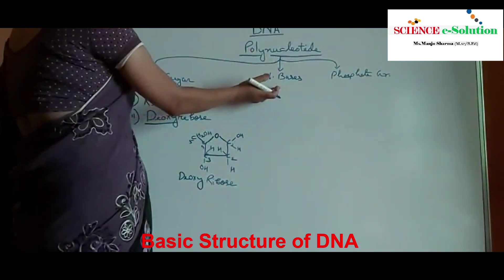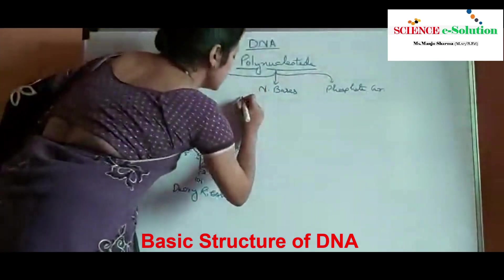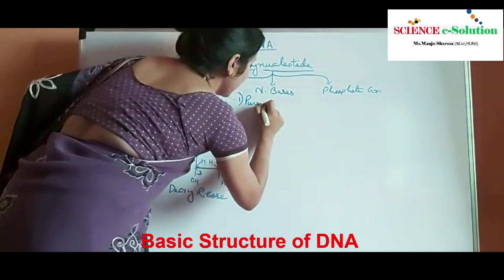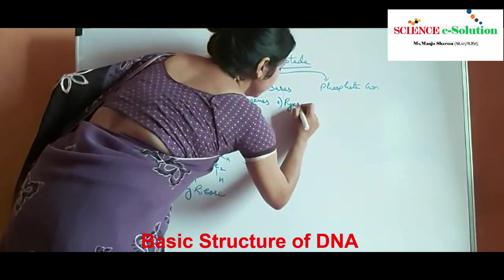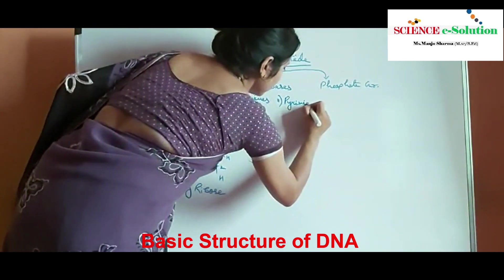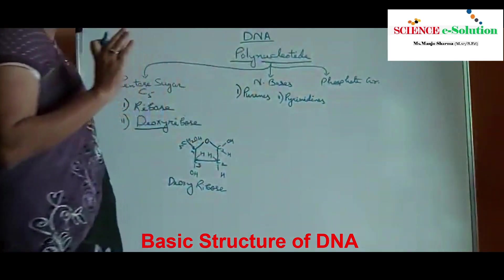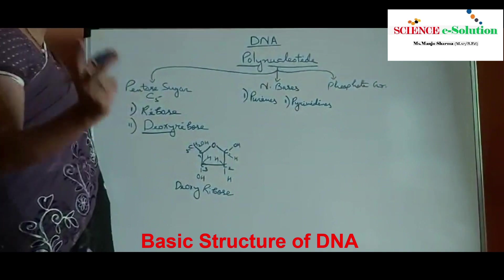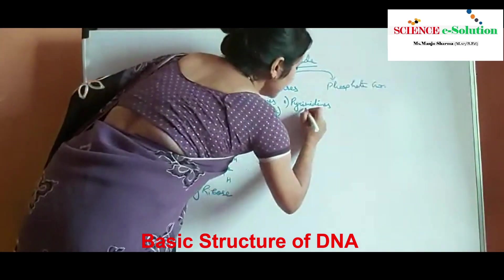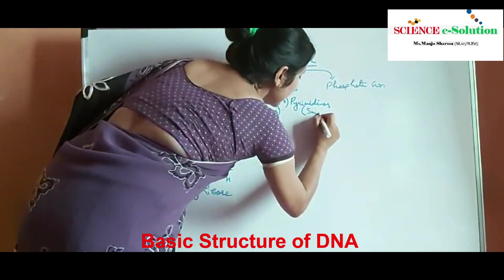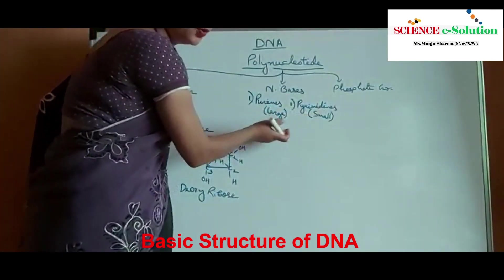The second component present in a nucleotide is nitrogenous bases, which are again of two types. The first one is purines and the second one is pyrimidines. Purines are very large structures — they are made up of two rings, a double ring structure, and they are larger in size and complicated in structure. But pyrimidines are smaller in size, made up of a single ring, and they are much simpler in structure than purines.